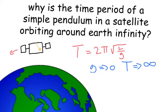So if g is appearing like it's zero, with this formula here, T is going to tend towards infinity. So it's going to take an infinite time to tick and that's why the time period of a pendulum floating around in a satellite orbiting around the earth is infinite.